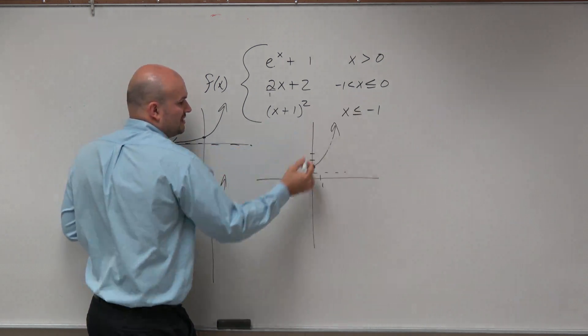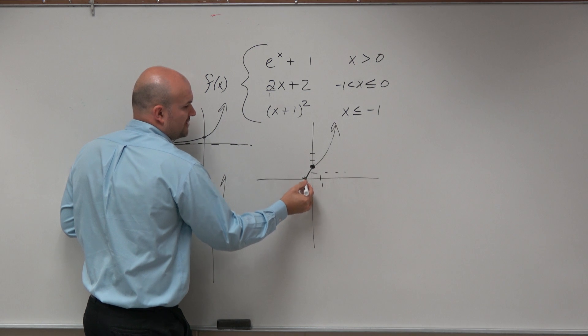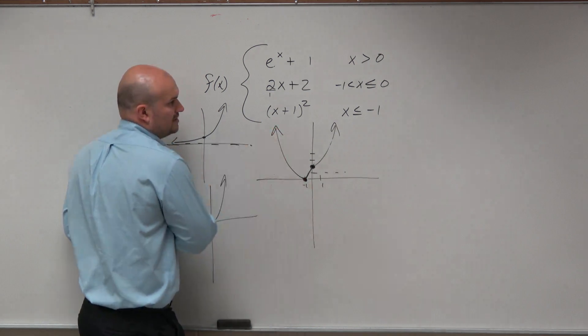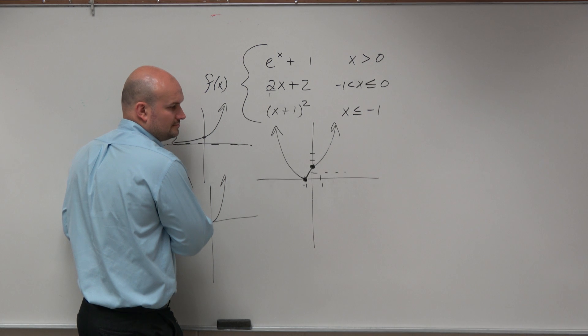However, it says only graph x for less than negative 1, so that's equal to. And then it looks like something like that.